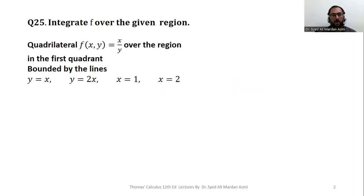The statement of problem is integrate f over the given region. Our region is quadrilateral, which is in first quadrant bounded by the lines y equal to x, y equal to 2x, x equal to 1, x equal to 2. And we will integrate this function f of x, y is equal to x over y over this region.